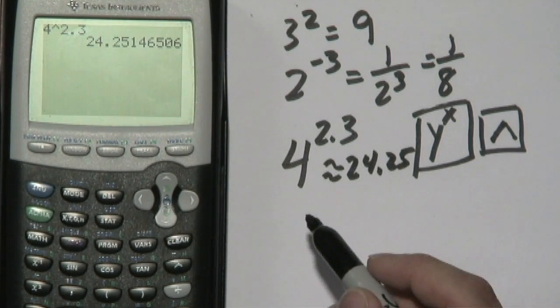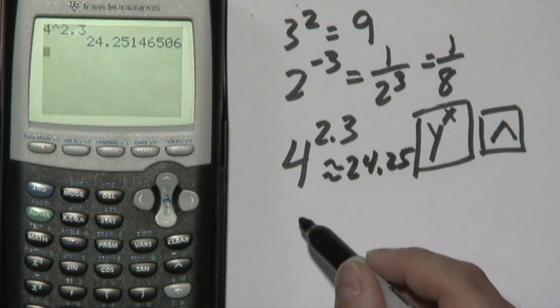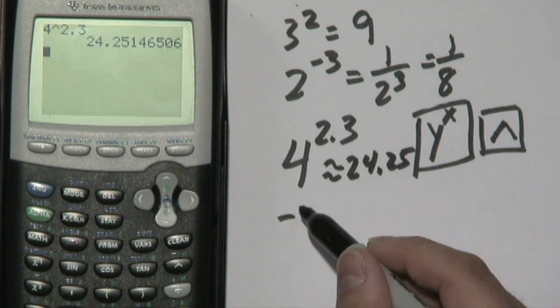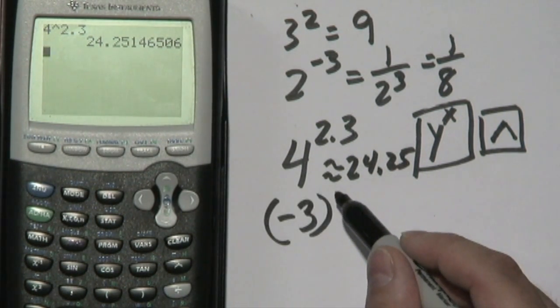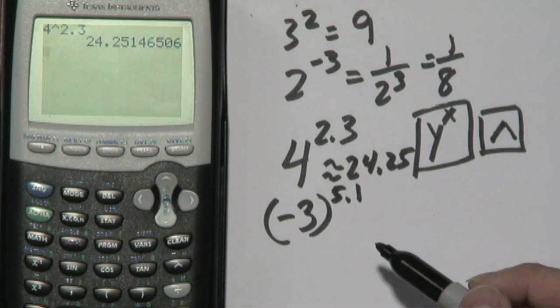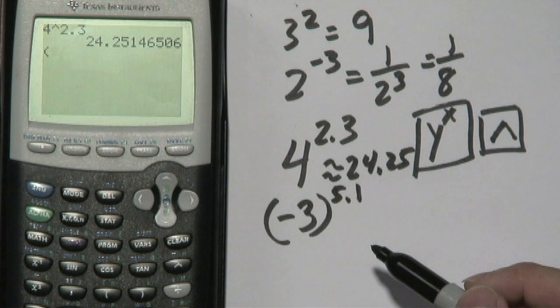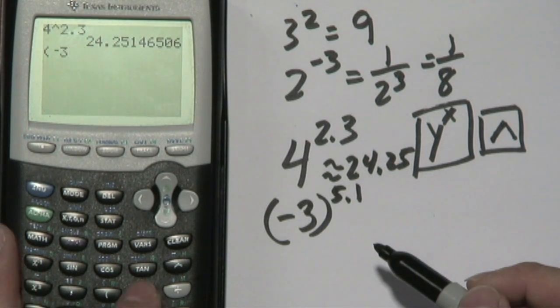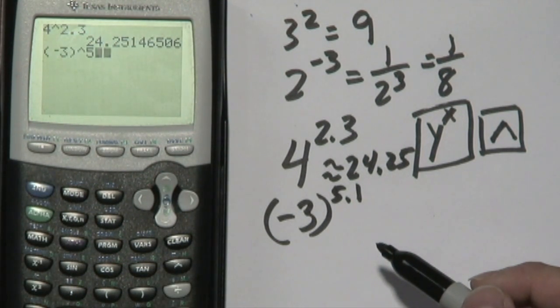Now, if you wanted to, you could have it do negative 3 to the 5.1 power. Now, if you were curious about that, you would start at parentheses, negative 3, and then raise it to the 5.1 power.